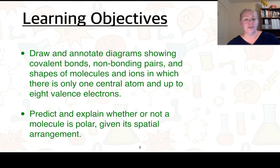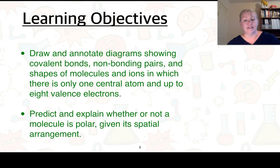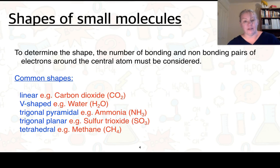So what do you need to be able to do for this section? You need to be able to draw and annotate diagrams showing covalent bonds with non-bonding pairs and the shapes of molecules and ions in which there's only one central atom and up to eight valence electrons. You also need to be able to predict and explain whether or not a molecule is polar given its spatial arrangement.